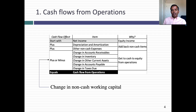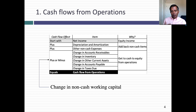The cash flow from operations usually starts with net income. You can see why I've been emphasizing that statements of cash flows are measured through the eyes of equity investors — net income is equity income. The proverbial bottom line in the income statement becomes the starting point for the cash flows from operations.